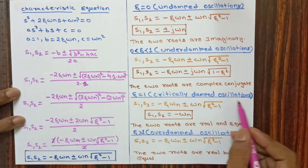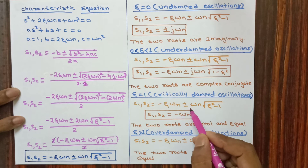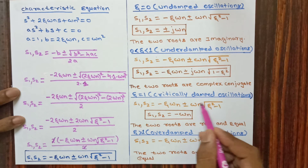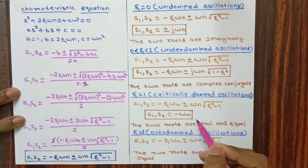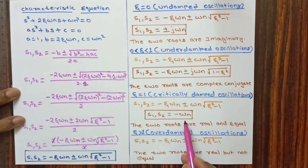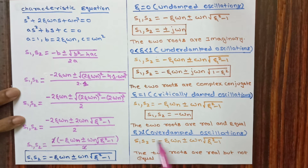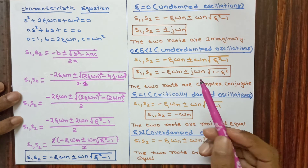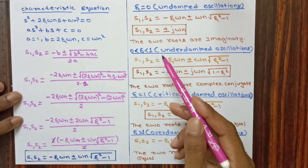For zeta=1 (critically damped), substituting into s1, s2 = -zeta*omega_n ± omega_n * sqrt(zeta^2 - 1), the square root term becomes 0, giving s1 = s2 = -omega_n. The two roots are real and equal. For zeta > 1 (overdamped), s1, s2 = -zeta*omega_n ± omega_n * sqrt(zeta^2 - 1), which remain as-is. The two roots are real but not equal.